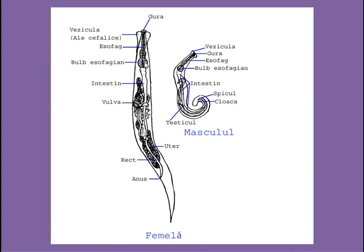Another characteristic feature is the presence of a dilated, bulb-like end of the pharynx called the end bulb. Males and females are separate, showing sexual dimorphism. The male is smaller, around 2 to 5 mm long and 0.2 mm thick, whereas the female is 8 to 13 mm long and 0.5 mm thick. The male has a curved posterior end, while the female has a straight, sharply pointed tail-like posterior end.